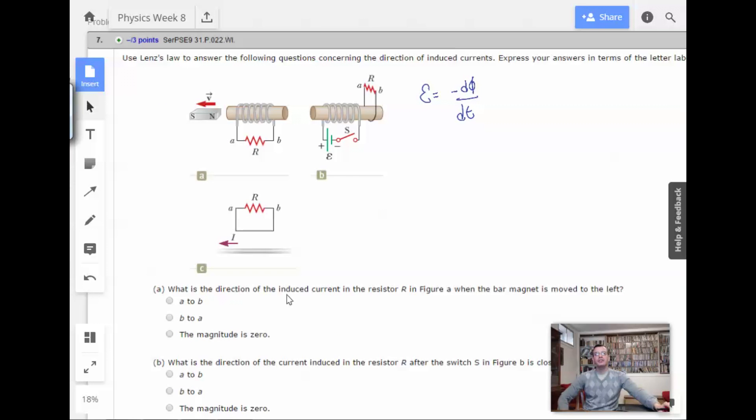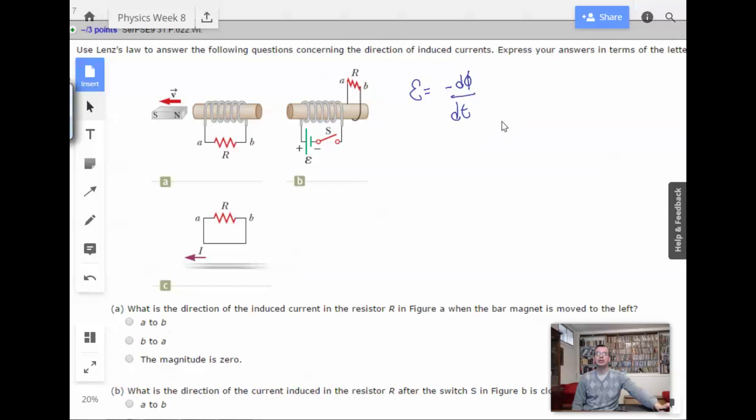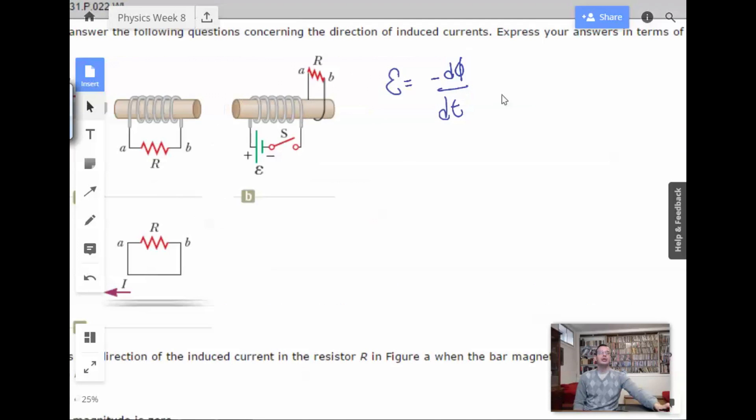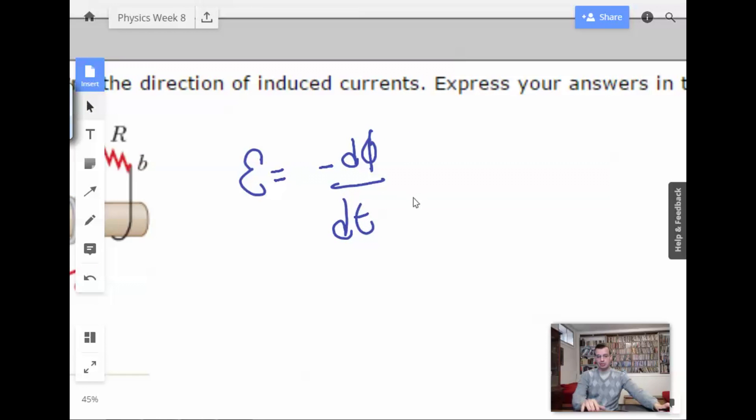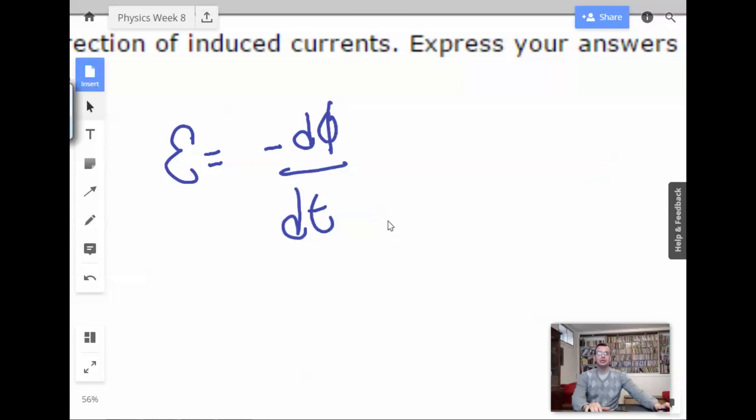All right. What is the direction of the induced current in resistor R in figure A where the bar magnet is moved to the left? Okay. So I'm going to expand this. So this is going to be negative d, I'm not going to do B·A because I know they're already parallel. So I'm going to call it B times A.